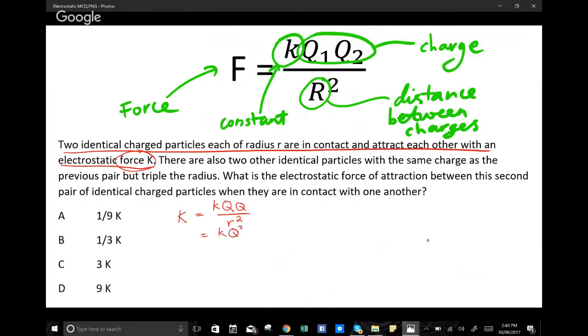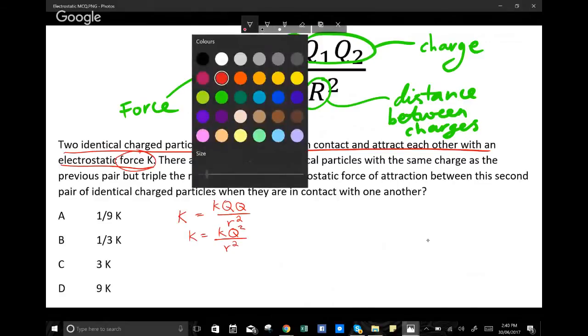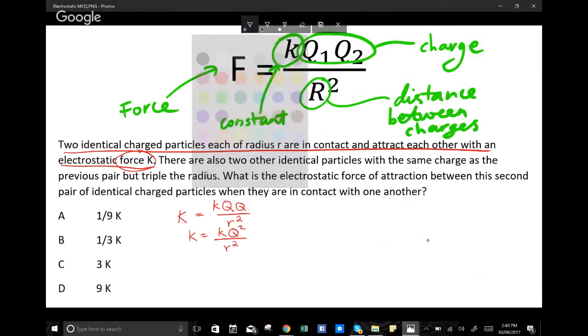From that equation we have this, and I'm just going to simplify this a little bit. It's going to be k Q squared over R squared.